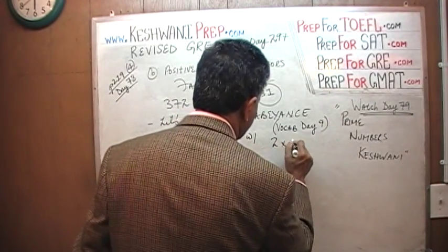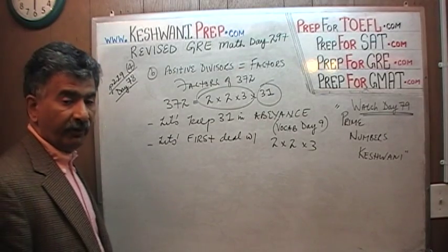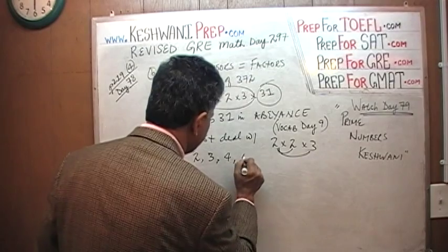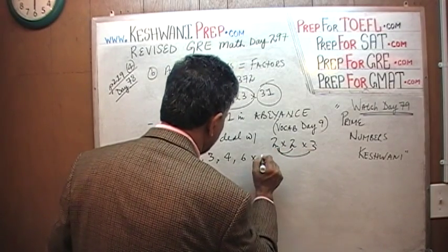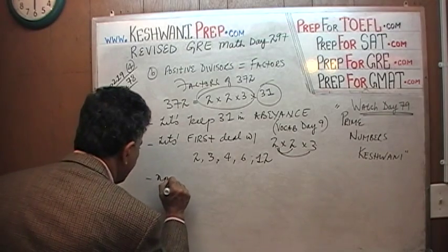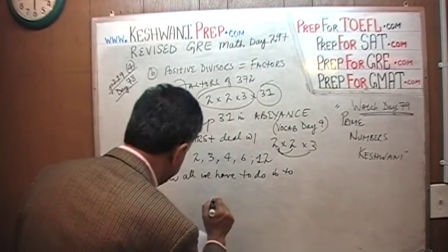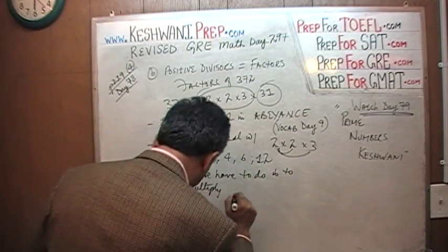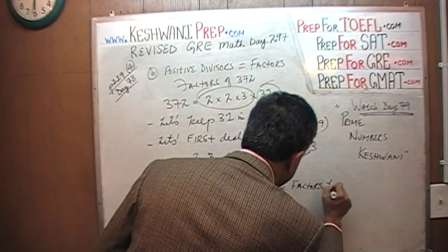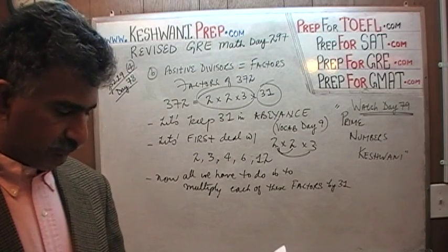Let's first deal with 2 times 2 times 3, which is 12 — very straightforward. To figure out the factors of 12: the factors are 2, 3, then 2 times 2 which is 4, then 2 times 3 which is 6, and then 2 times 2 times 3 which is 12. Now all we have to do is multiply each one of these factors by 31. We'll introduce the 31, and when we do that, we'll have all of our factors.